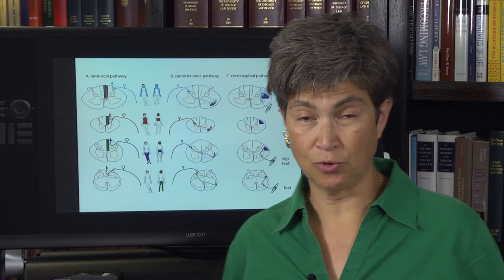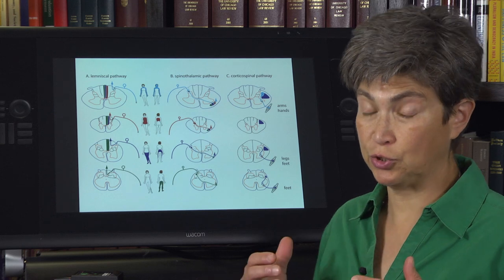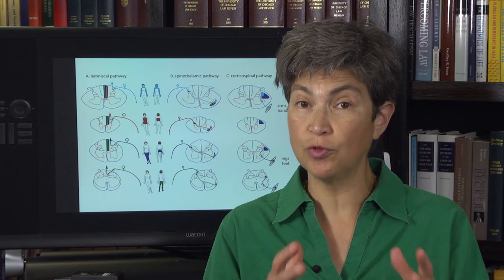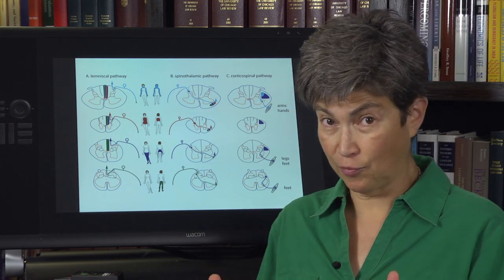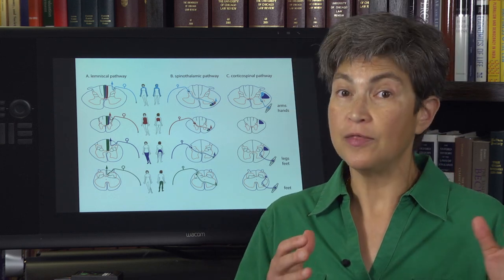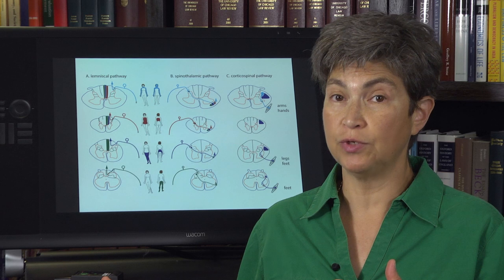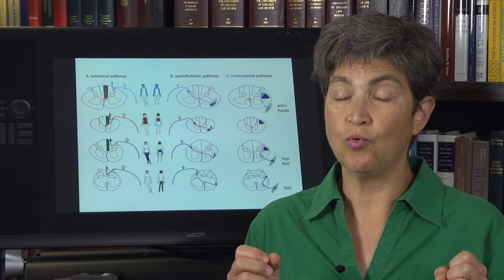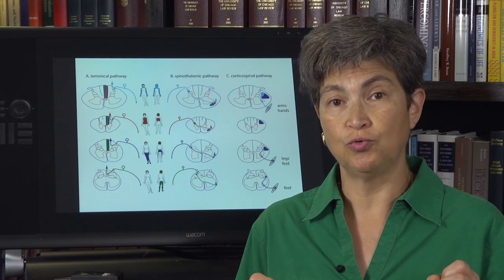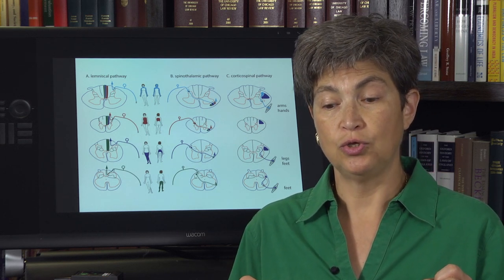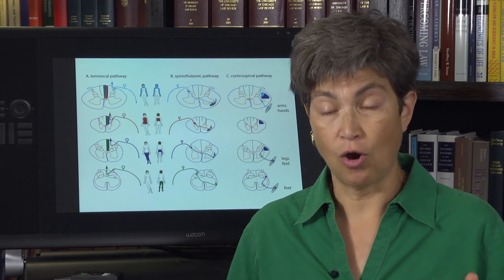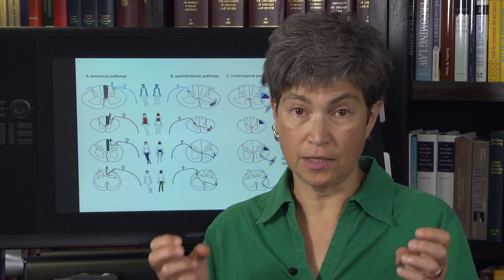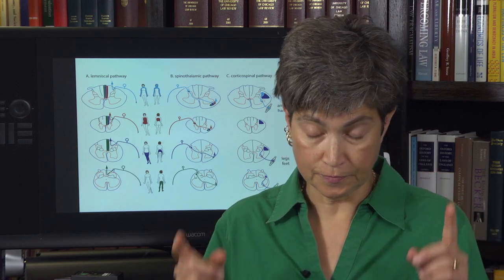To finish up spinal cord, we're going to do two things. First, we're going to review the three long pathways that course through the spinal cord. And then we are going to use that knowledge to look at three iconic lesions.